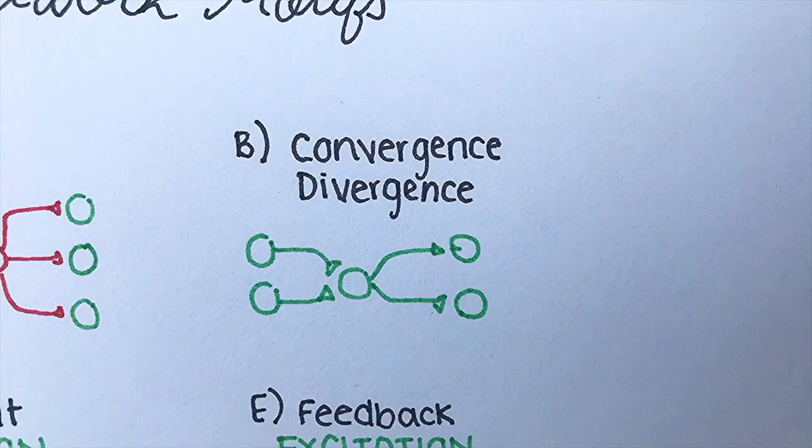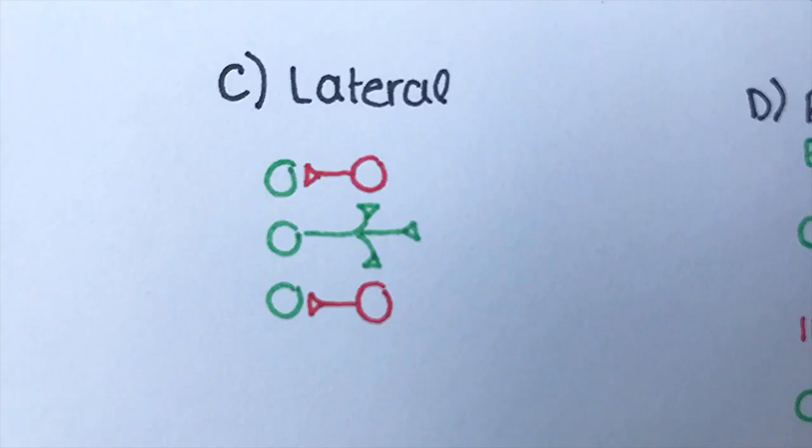Next you can see convergence and divergence. Next, lateral inhibition is where the activity of a single cell in the circuit causes the inhibition of its neighboring cells through the loop that you see there, using an inhibitory neuron.